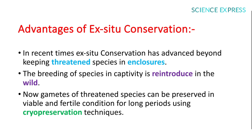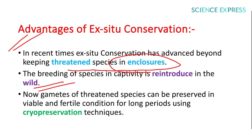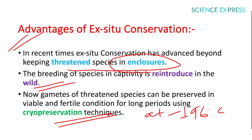Ex-situ conservation has advanced beyond keeping species in enclosures. Breeding species in captivity for reintroduction into the wild is now possible. Gametes of threatened species can be preserved in viable and fertile condition for longer periods using cryopreservation technique, where components are preserved at minus 196 degrees centigrade in liquid nitrogen.